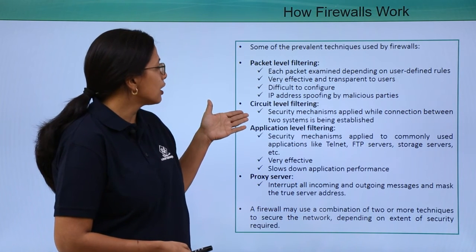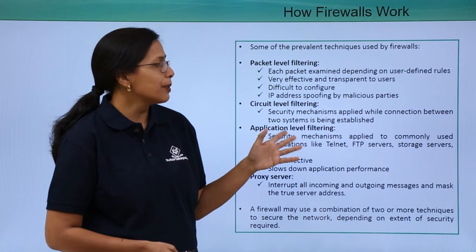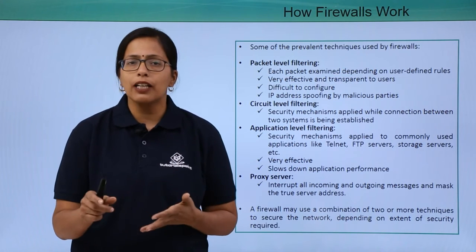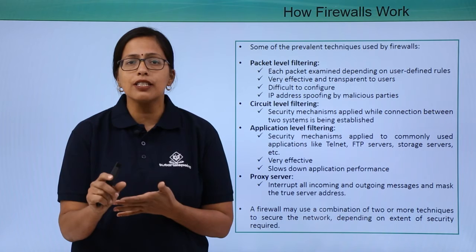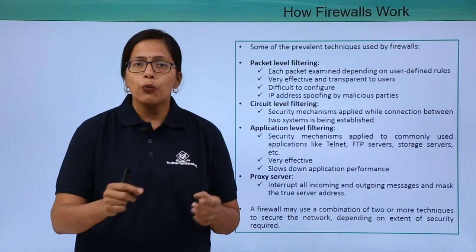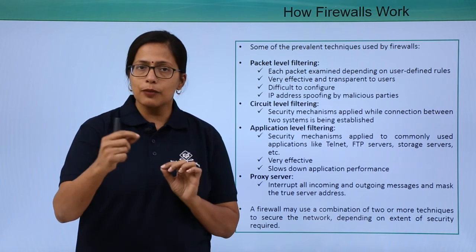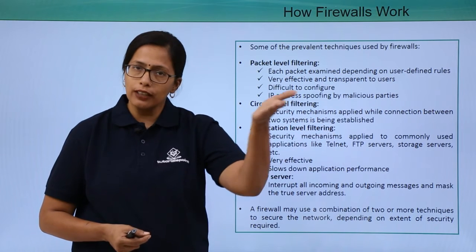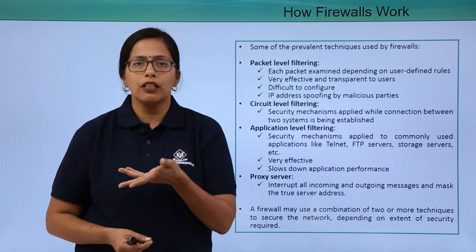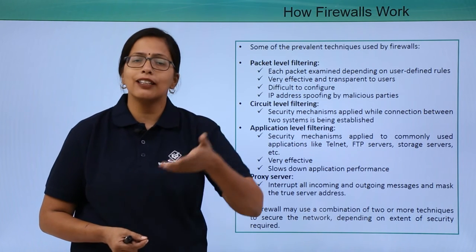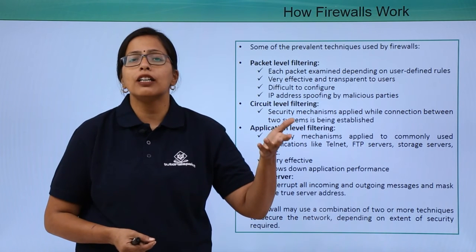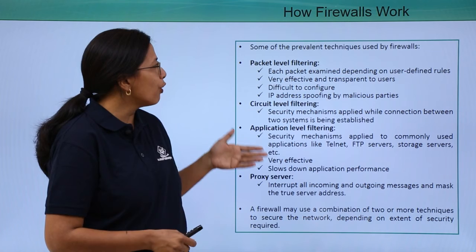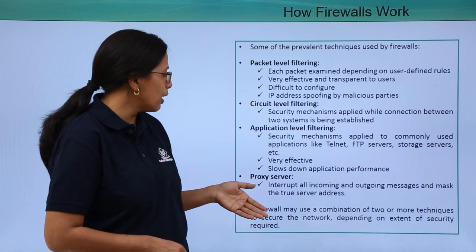The next is circuit level filtering. In circuit level filtering, security mechanisms or security protocols are used when the circuit is being established. For example, when node 1 wants to communicate with node 2, at the point when that communication link is being established, the security mechanisms are implemented. These are the four techniques used by firewalls.